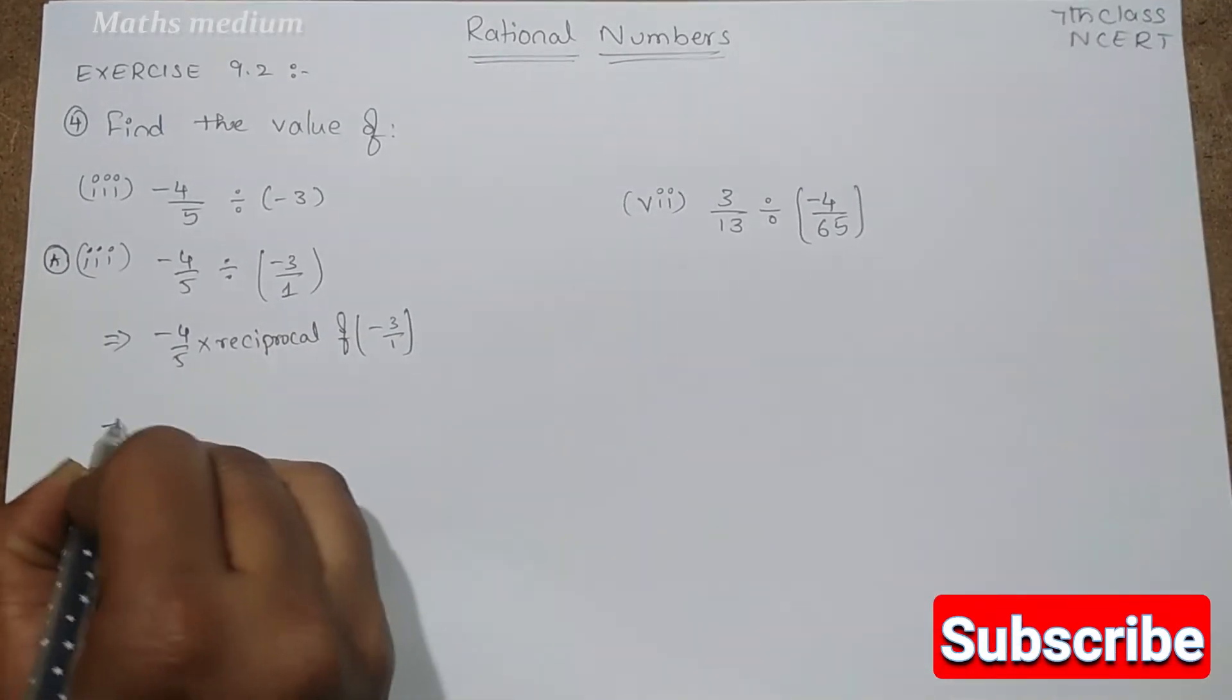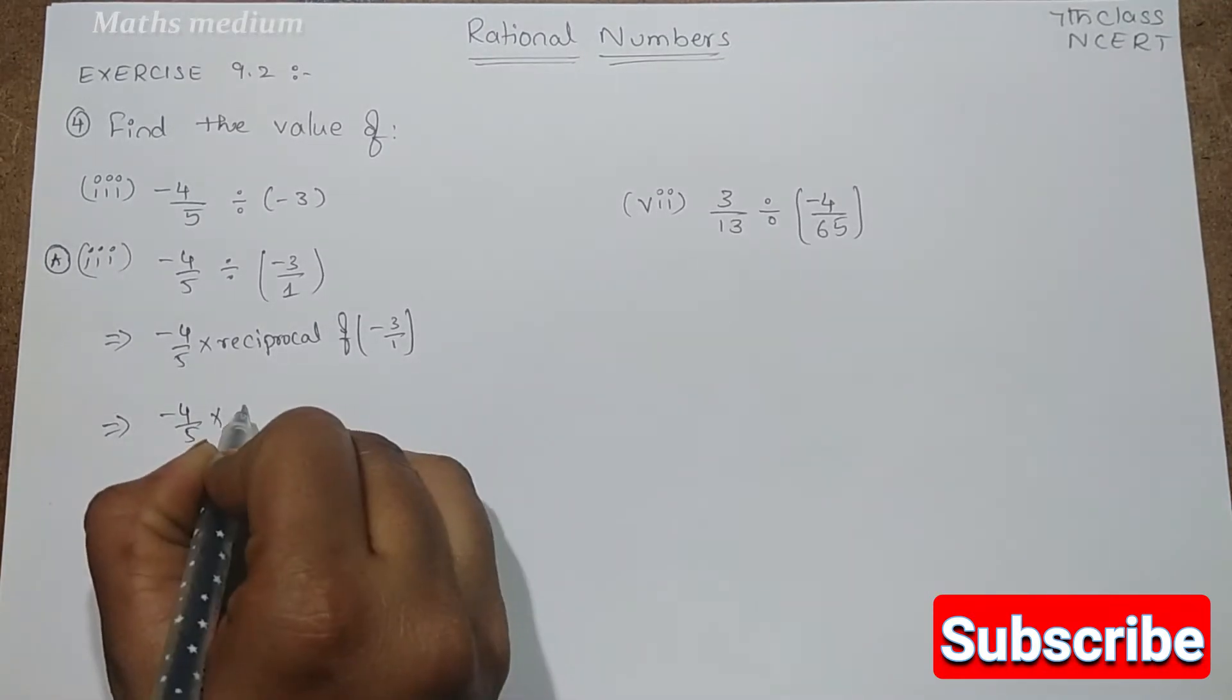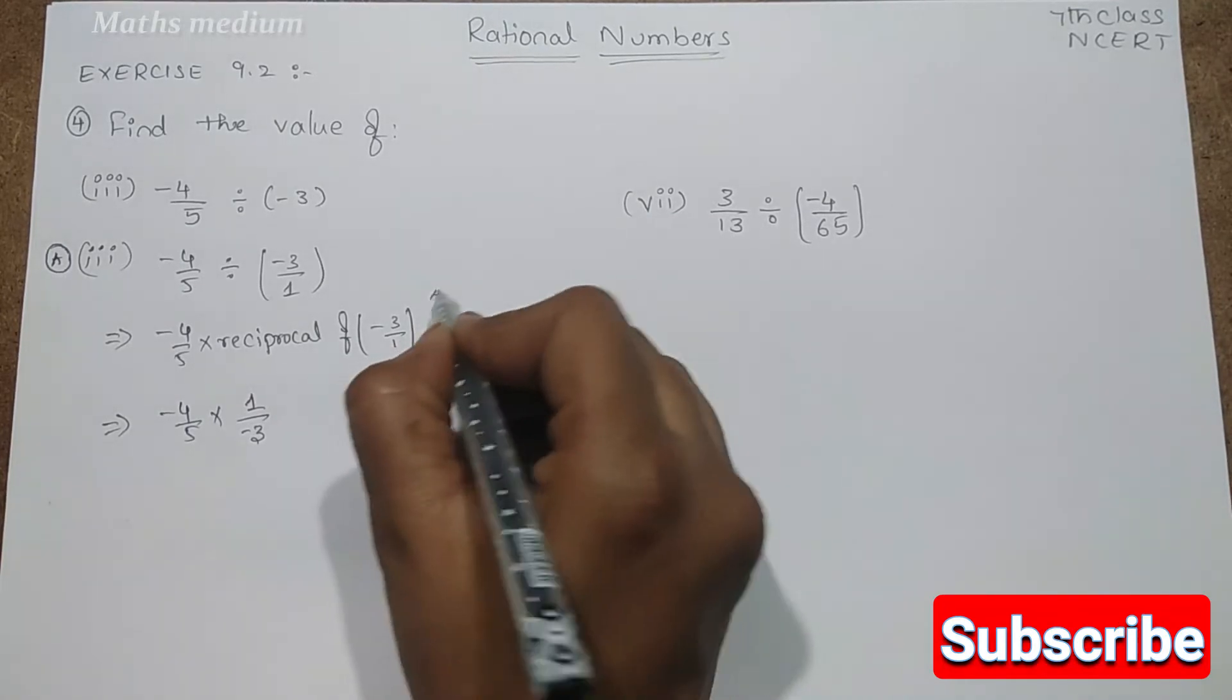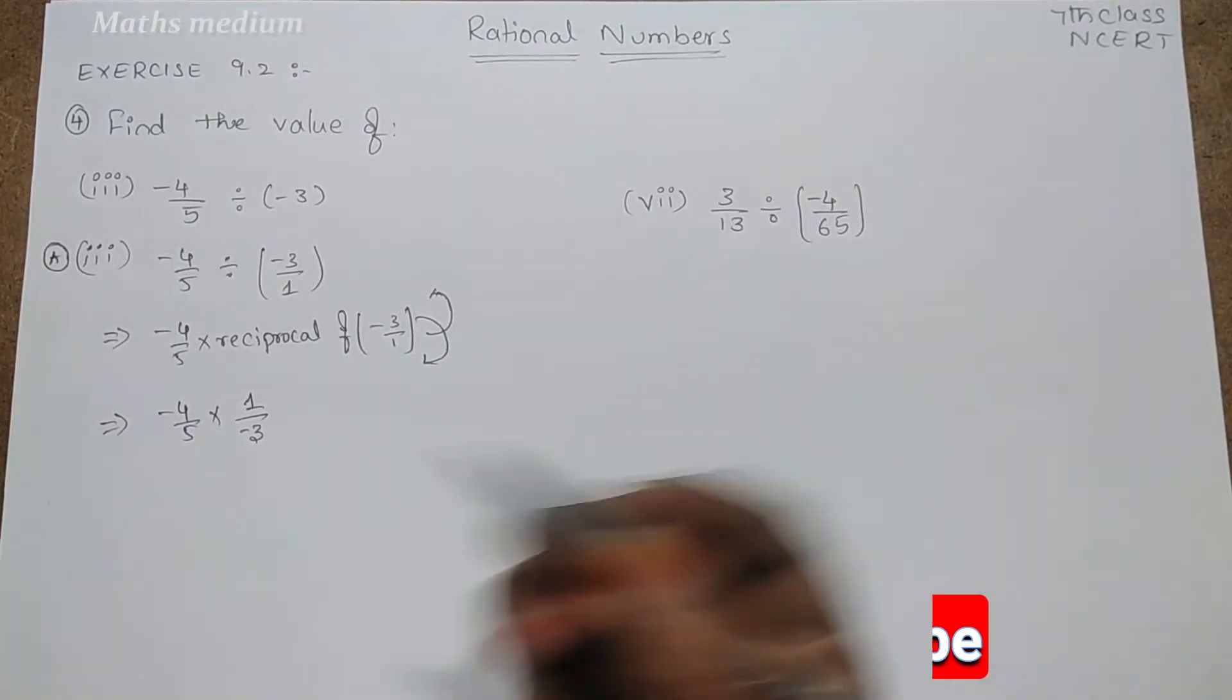It means -4/5 into 1/(-3). The numerator gets denominator and denominator gets the numerator.